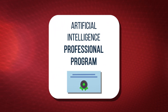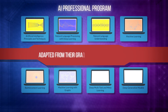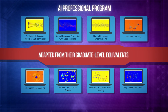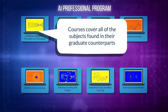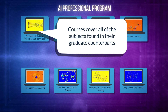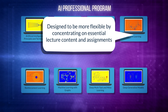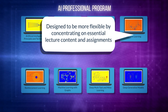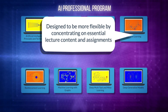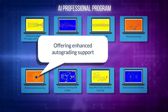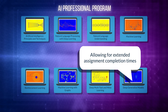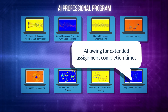The Artificial Intelligence Professional Program is a series of courses adapted from their graduate-level equivalents. The courses in the Professional Program cover all of the subjects found in their graduate counterparts. However, they are designed to be more flexible by concentrating on essential lecture content and assignments, offering enhanced auto-grading support and allowing for extended assignment completion times.